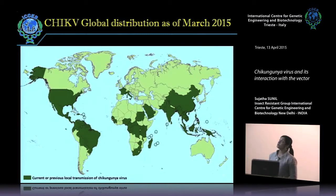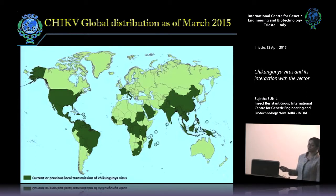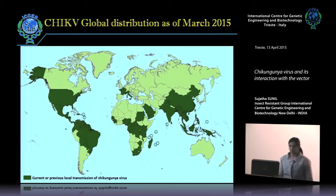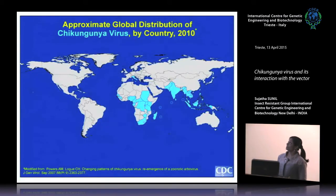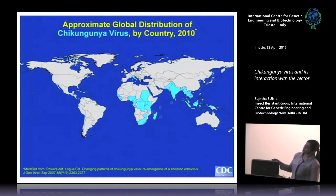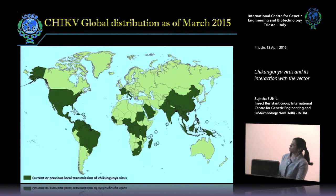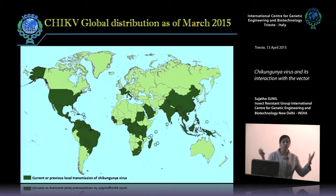If you're going to talk about the distribution of chikungunya virus, this is how it is as of March 2015. You have most of Asia and Southeast Asia being affected, the endemic region in Africa, half of Latin America, and some parts of the US — mainly the southern parts. What is very surprising is that this was the status in 2010, and by 2015 you can see the spread, which is definitely a global concern.